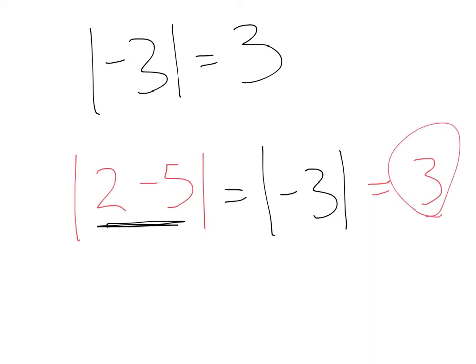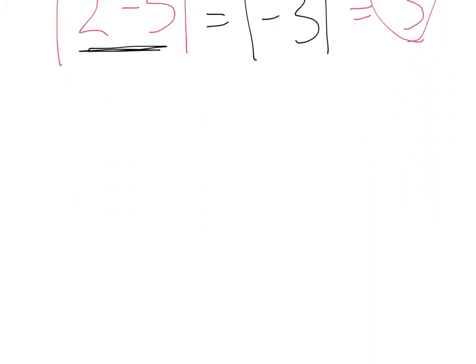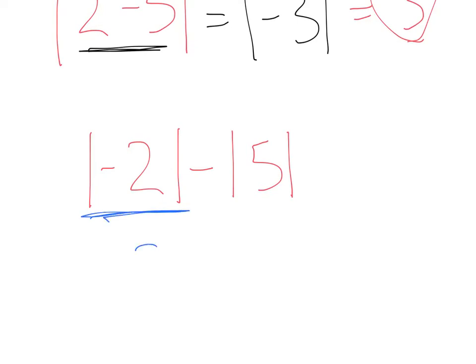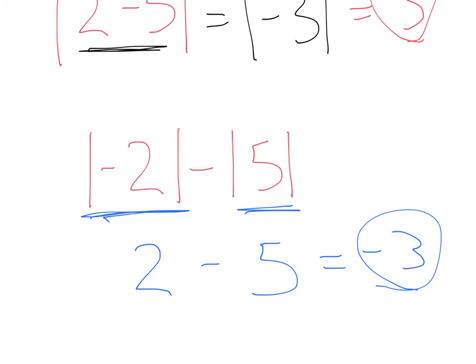Because negative three is again three spaces from zero. Let's say we had absolute value of negative two minus absolute value of five. We could simplify this: absolute value of negative two is positive two, and absolute value of five is five. That would give us two minus five, which gives us negative three.